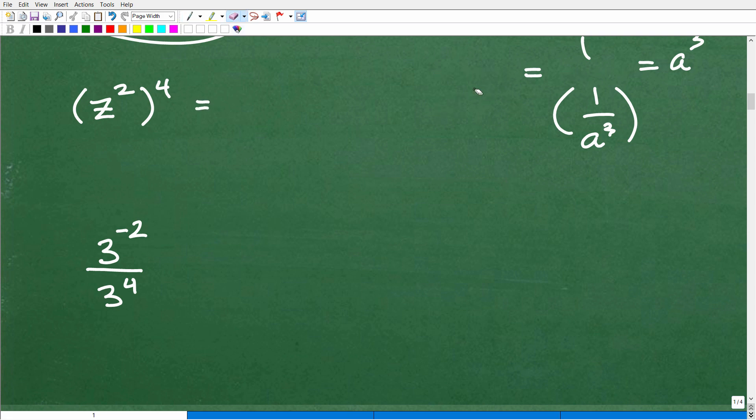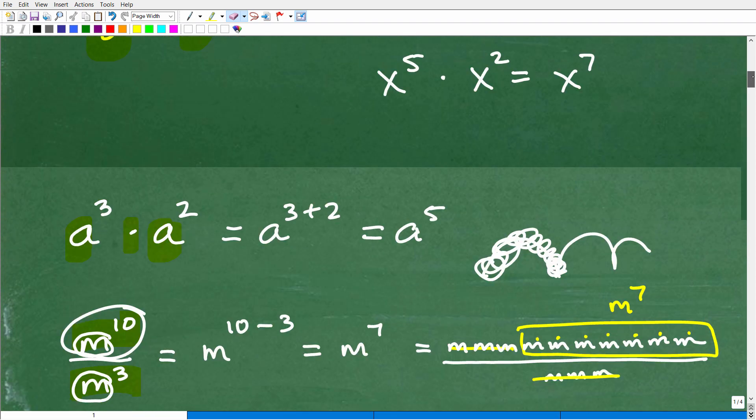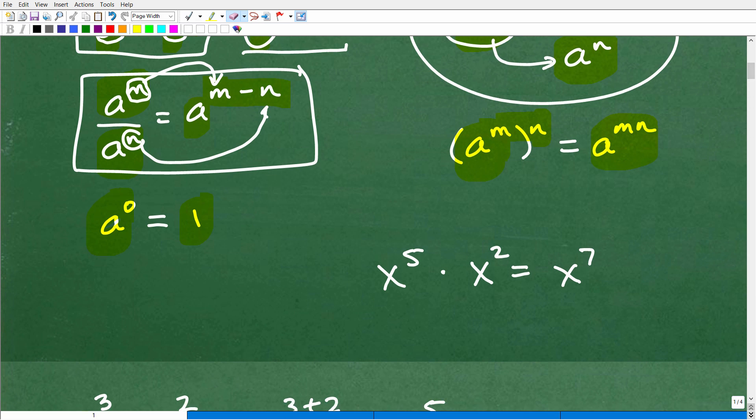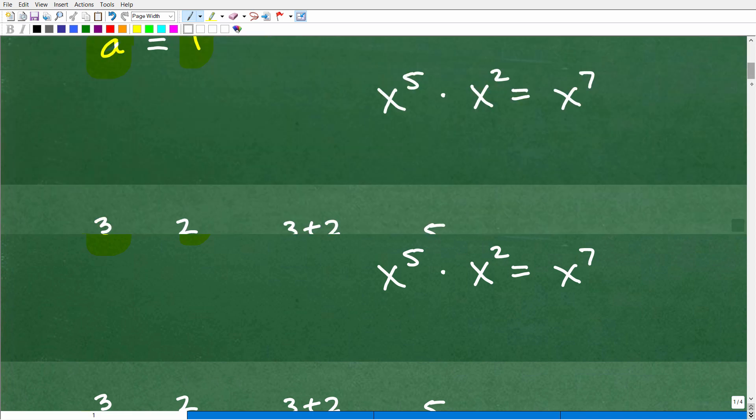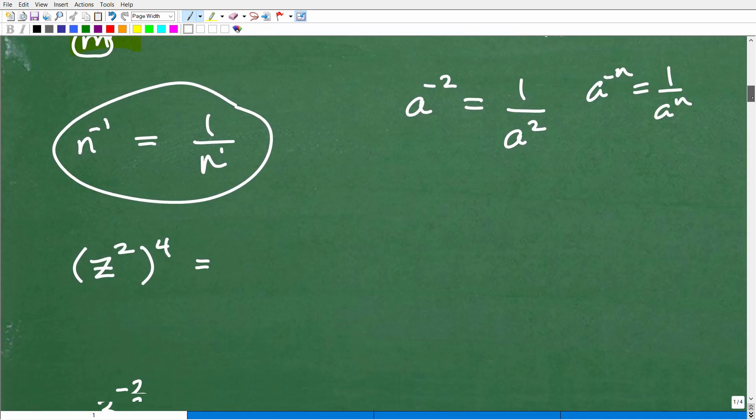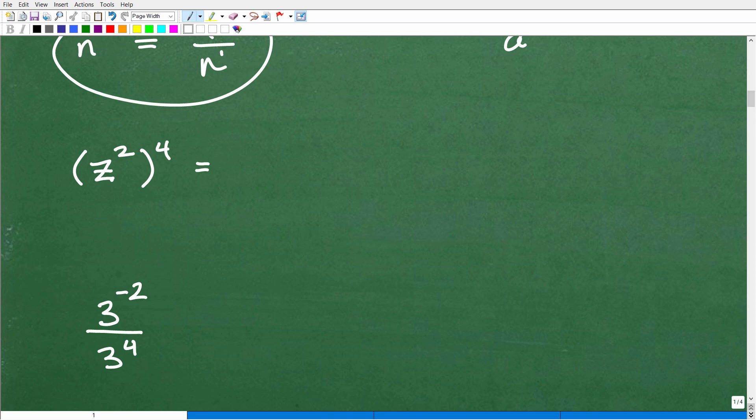All right, let's move on to this last problem. This is a power to a power, and we could just reference this situation with this property right here. A to the n times n. We're just simply going to multiply the exponents. Very, very easy. So z squared to the fourth is nothing more than z to the eighth power. Pretty easy stuff.